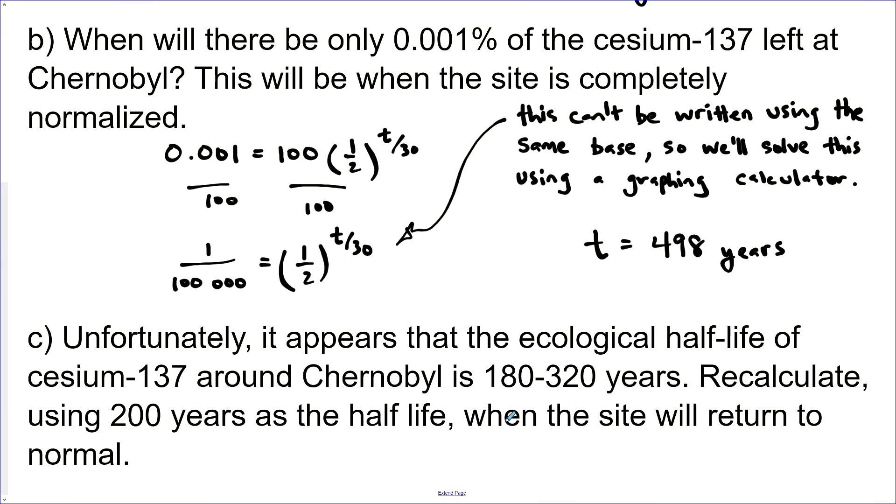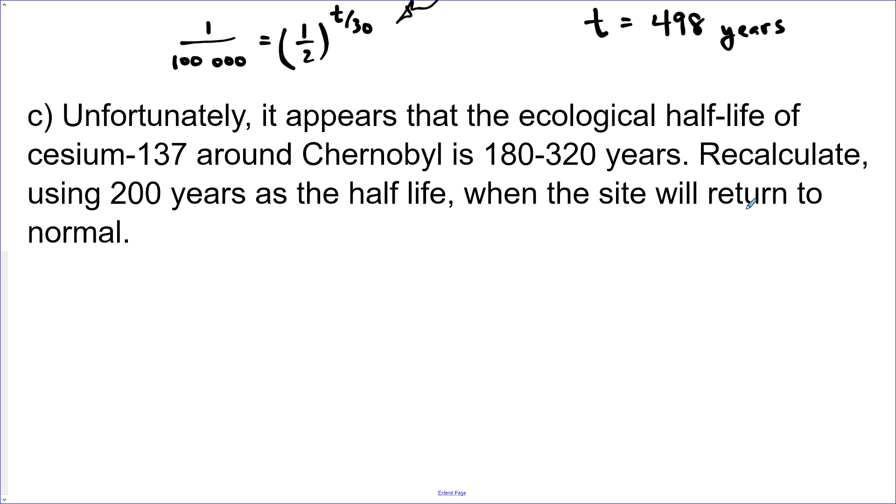So we've got to use a calculator. And we get that the time is 498 years to normalize. Interestingly enough, it appears that the ecological half-life of cesium-137 around Chernobyl is 180 to 320 years. That means when they actually went out and tested the soil and water, they found that it was a lot longer than what they found in a laboratory for half-life. So let's recalculate using 200 years, which is about a low estimate here. When will the site return to normal? So we've got 0.001 and still equals this part. The only change we're making is putting in a more realistic half-life of 200 years. And then same deal. This actually can't be written using the same base either. And so we just have to solve this one using our calculator.